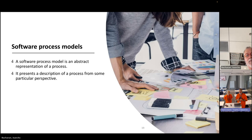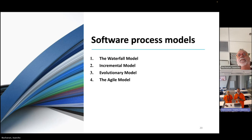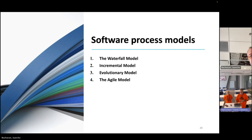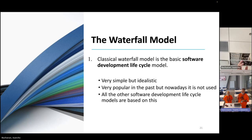A software process model is an abstract representation of a process. We're going to talk about the waterfall model, the incremental model, the evolutionary model, and the agile model. At the end of all that we're going to tell you there is really only one model for software development — the agile one — with different time scales.